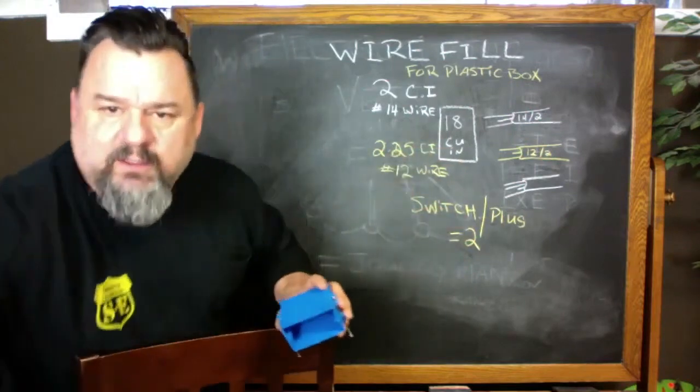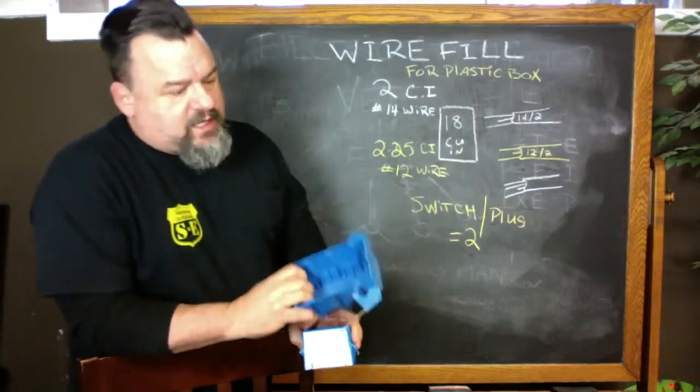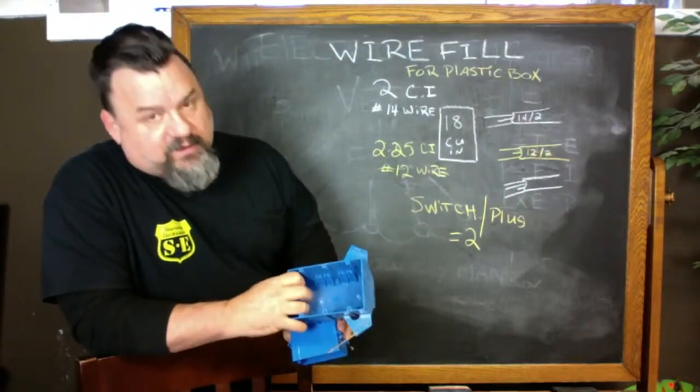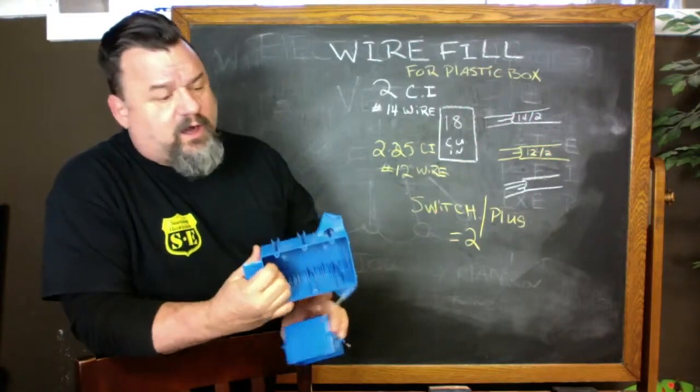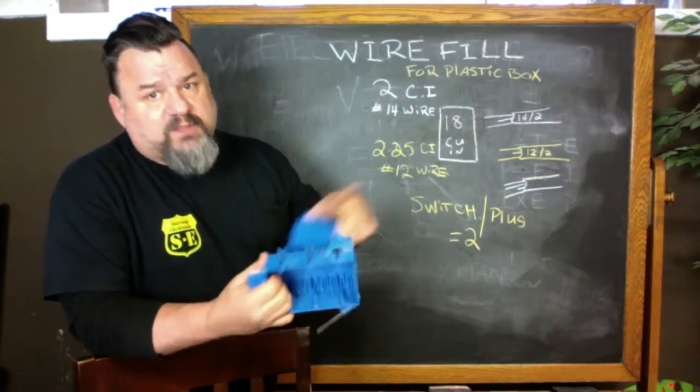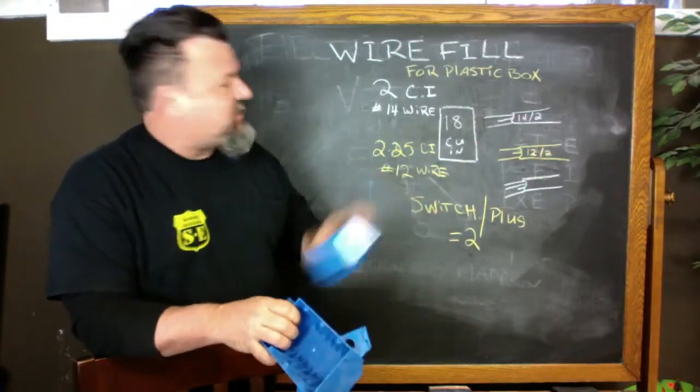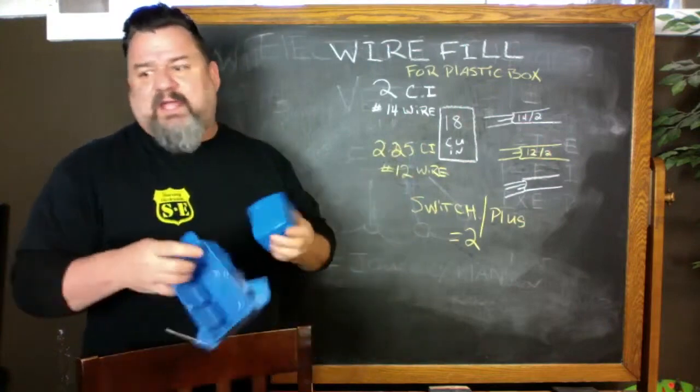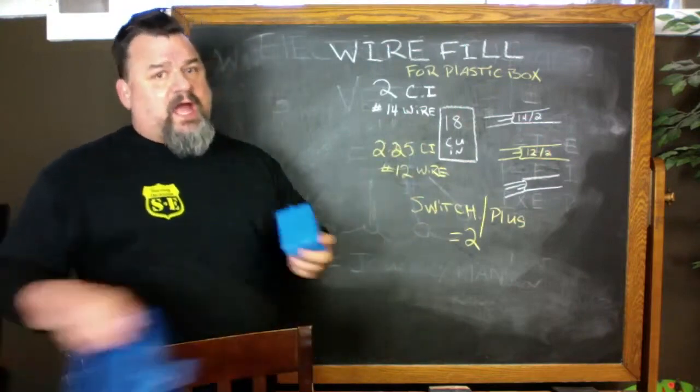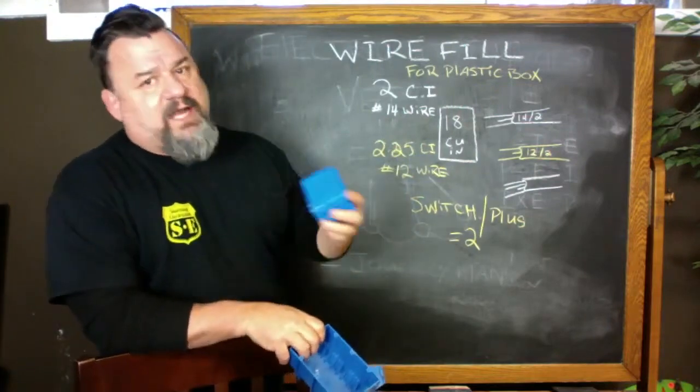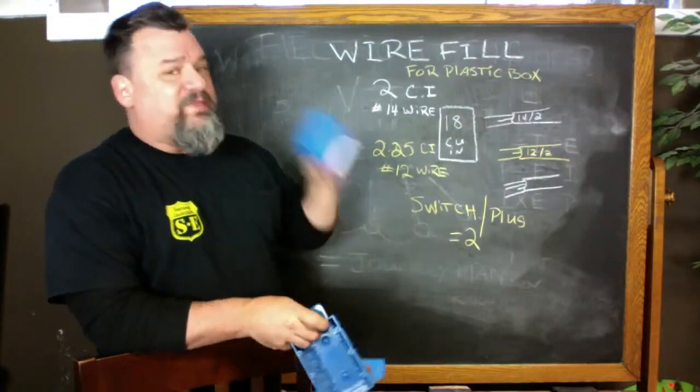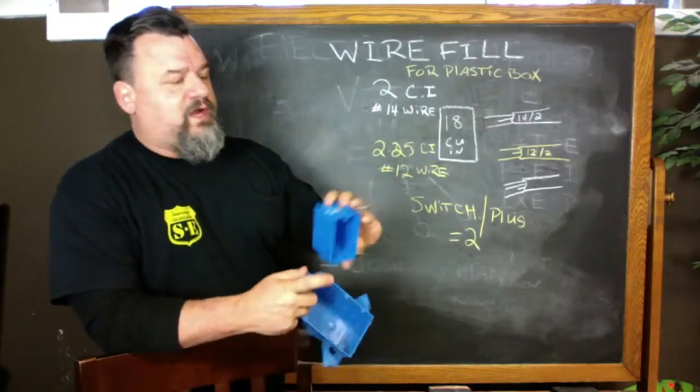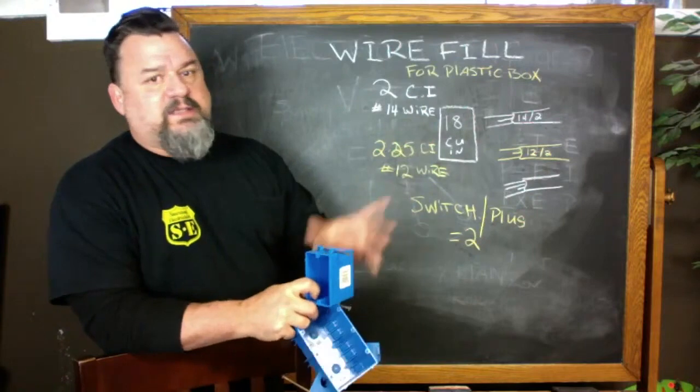I have a three gang switch box and they're all printed inside there. You have to know what the cubic inches are, your volume of your box. There's other applications if you've got steel boxes, how shallow they are, inside, outside, there's all kinds of different applications, but this is the quick and dirty of wire fill and it's as simple as that.